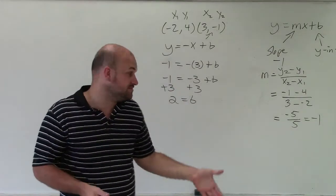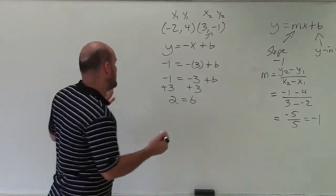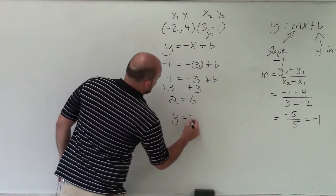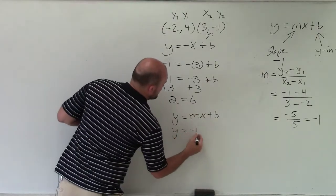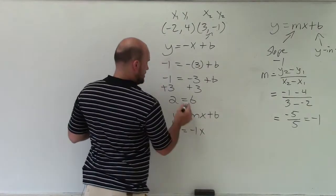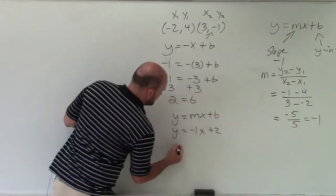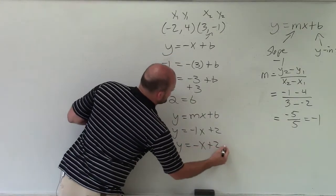So now I know my y-intercept is 2 and my slope is negative 1. Now I can just take my equation, y equals mx plus b, plug in negative 1 for m, and plug in 2 for b. I can simplify that as negative x plus 2.